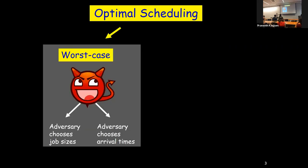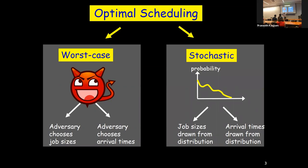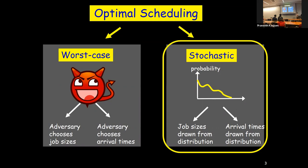Optimal scheduling comes in two flavors. In the theoretical computer science community, we're usually talking about the adversarial model — there's a big bad adversary trying to mess up your scheduling policy by giving you really bad job sizes and arrival times. By contrast, the stochastic setting is more realistic: job sizes are drawn from some real-world distribution, and arrival times are drawn from some real-world distribution. In the stochastic setting, job sizes are drawn IID from some general distribution, and things are proven for any general distribution.